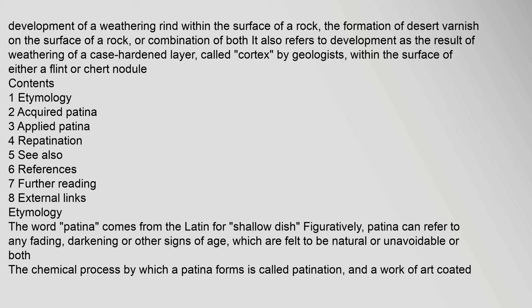Etymology: The word patina comes from the Latin for shallow dish. Figuratively, patina can refer to any fading, darkening or other signs of age, which are felt to be natural or unavoidable. The chemical process by which a patina forms is called patination, and a work of art coated by a patina is said to be patinated.